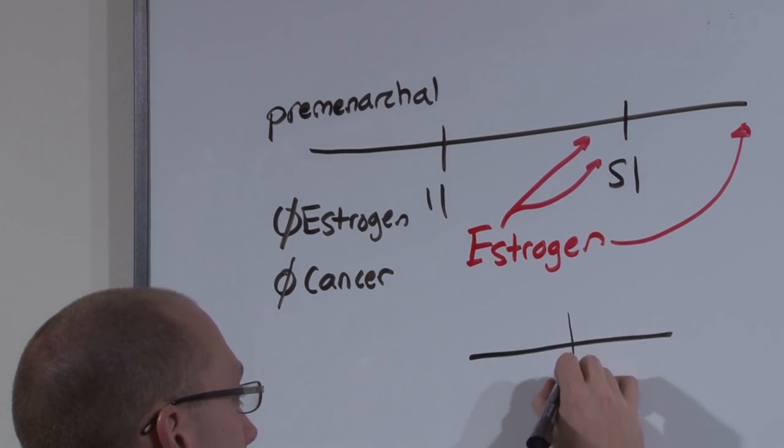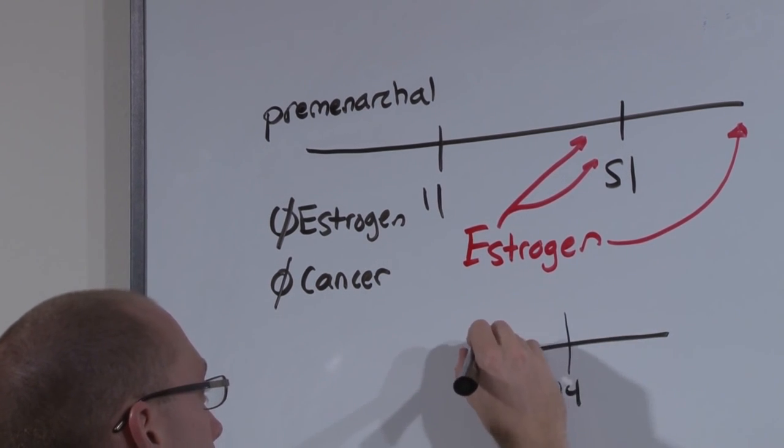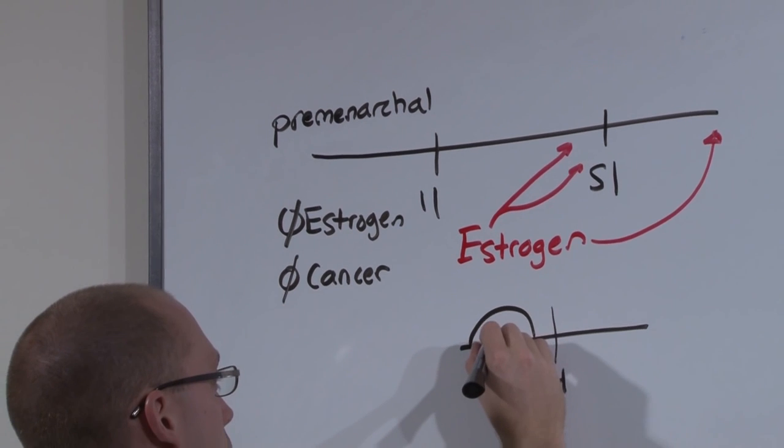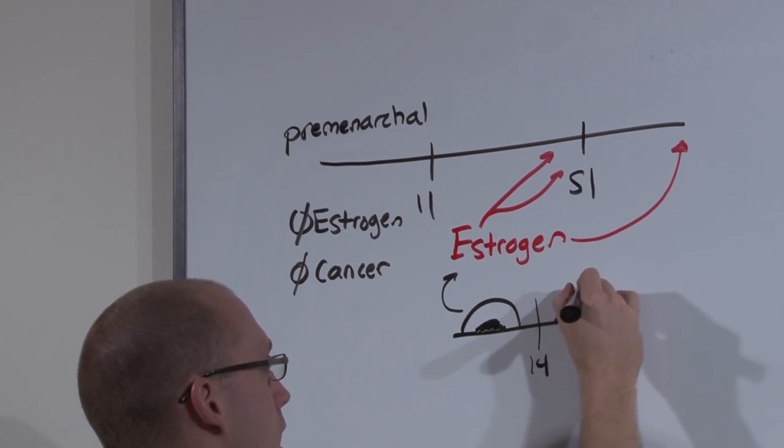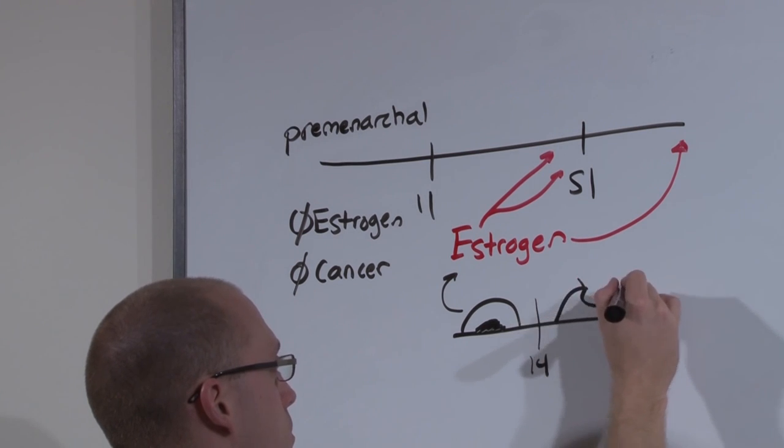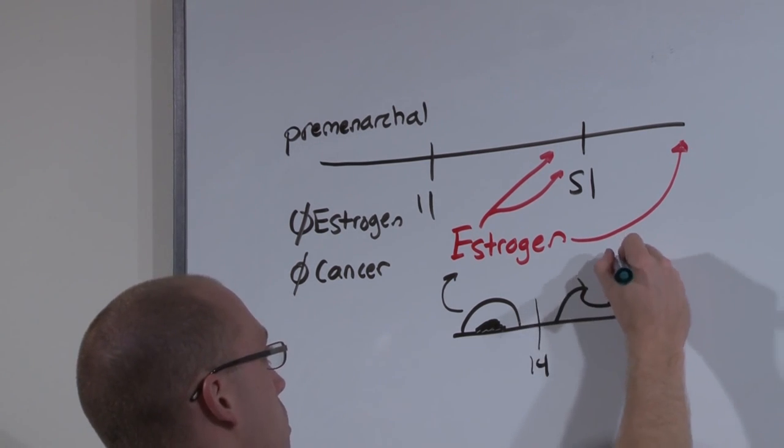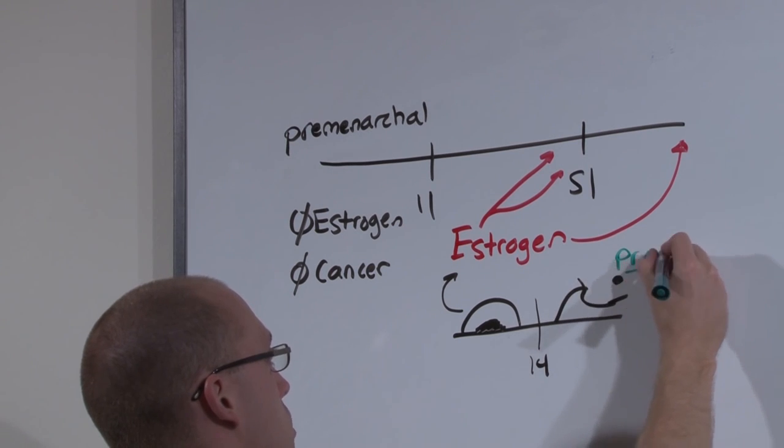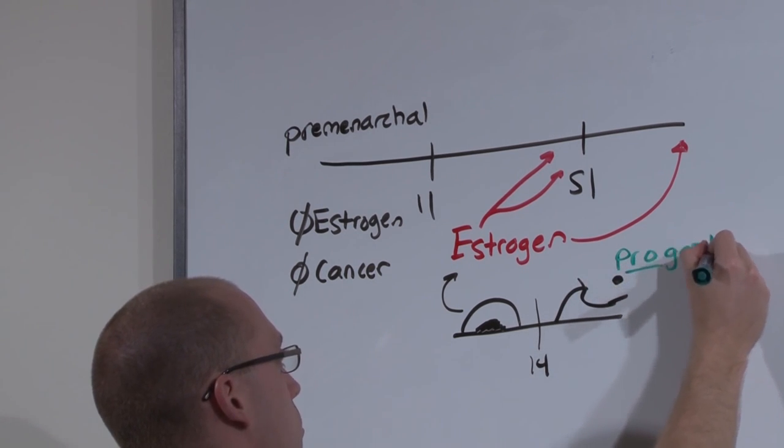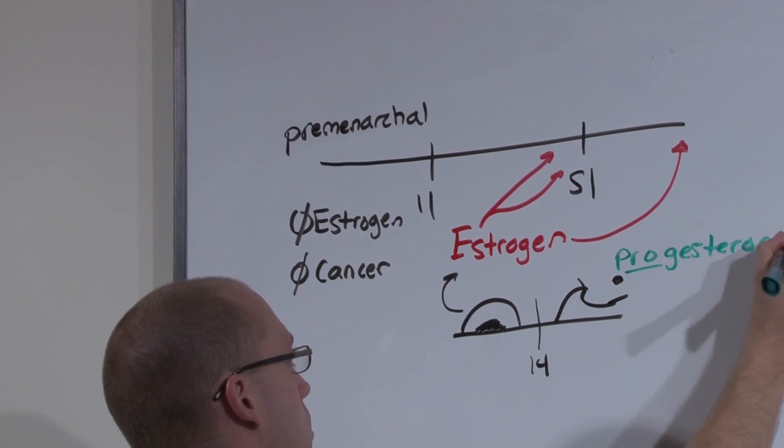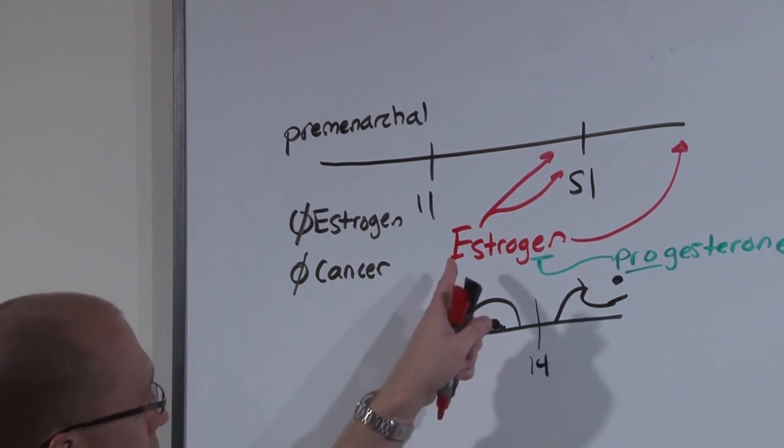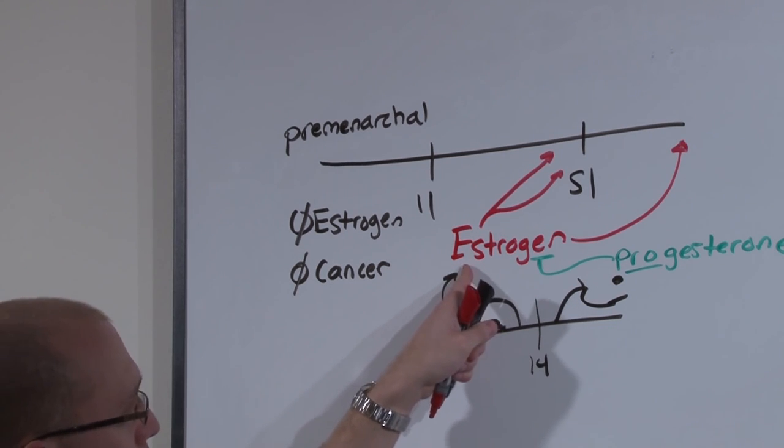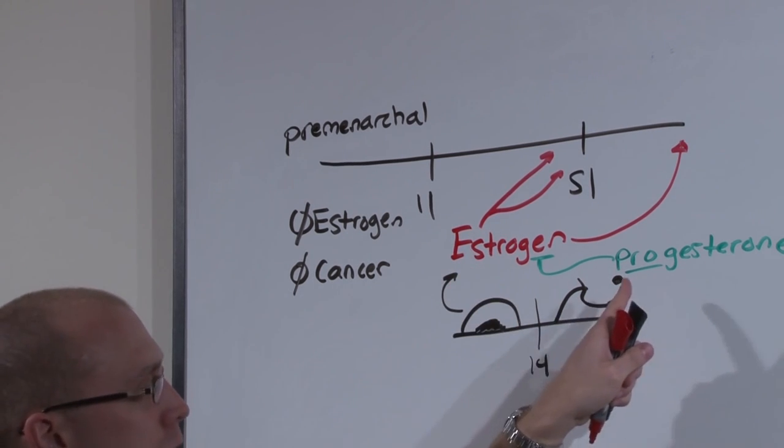Each month, each cycle, estrogen is made by the ovary. At ovulation, progesterone is produced. Progesterone is protective and inhibits the effect of estrogen. Estrogen exposure causes endometrial cancer. Progesterone is protective.